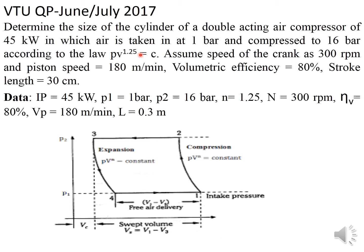Additional given data: speed of the crank is 300 rpm, piston speed is 180 meters per minute, volumetric efficiency is 80 percent, and stroke length is 30 centimeters. The indicated power is 45 kilowatt, inlet pressure p1 is 1 bar, and delivery pressure p2 is 16 bar.